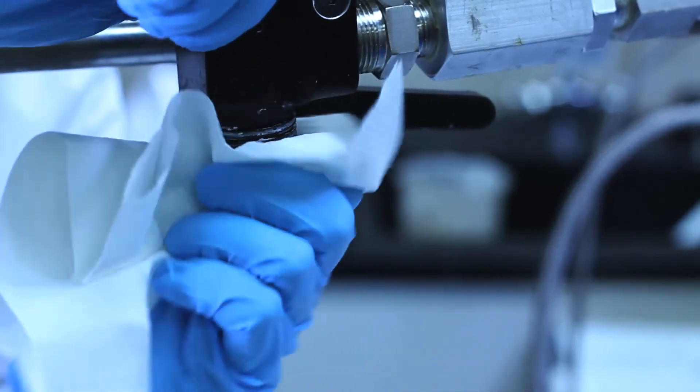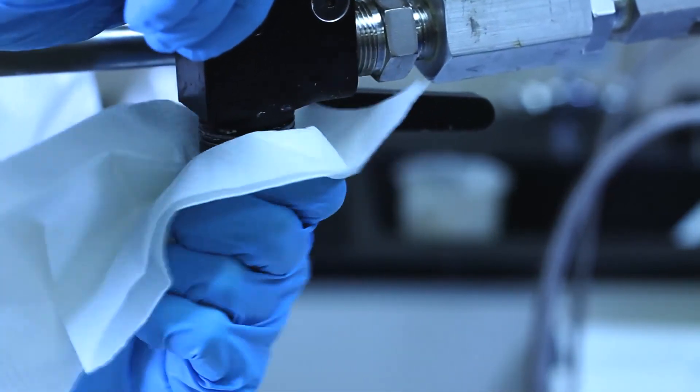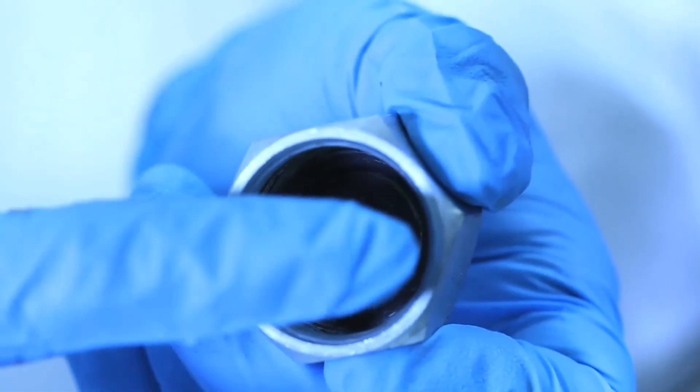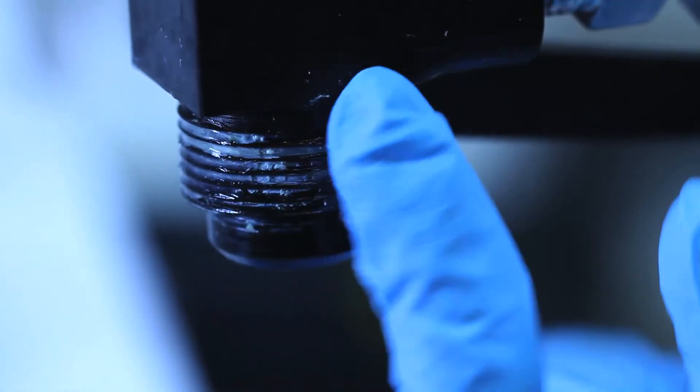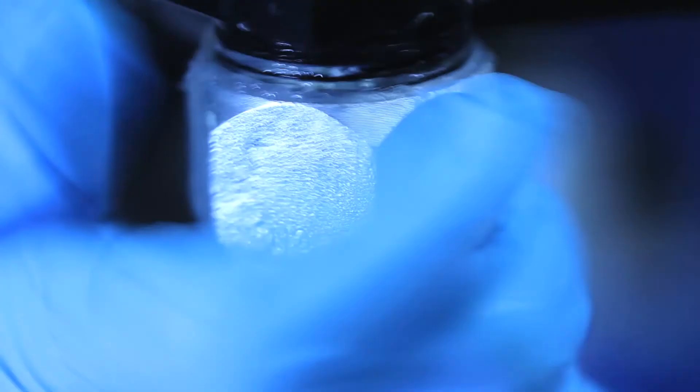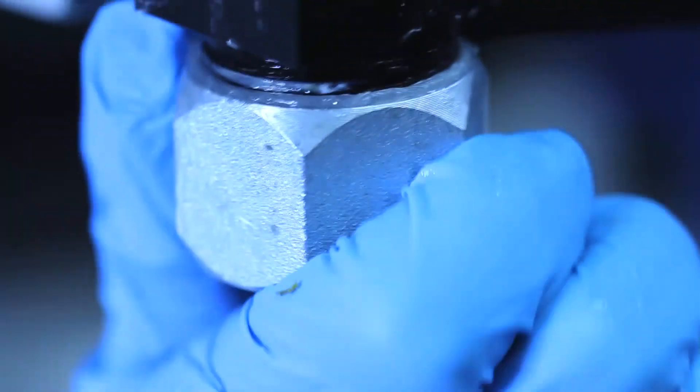For Step 3, you need to clean the threads on the discharge manifold. Put a small amount of grease in the end cap and on the threads to prevent adhering the end cap to the discharge manifold. And finally, hand-tighten the end cap onto the discharge manifold.